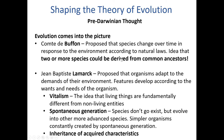So then evolution started to come into the picture. A French guy named Comte de Buffon proposed that species change over time in response to the environment according to natural laws. This was kind of the first idea that two or more species could be derived from common ancestors — basically the first idea of evolution coming into the picture.